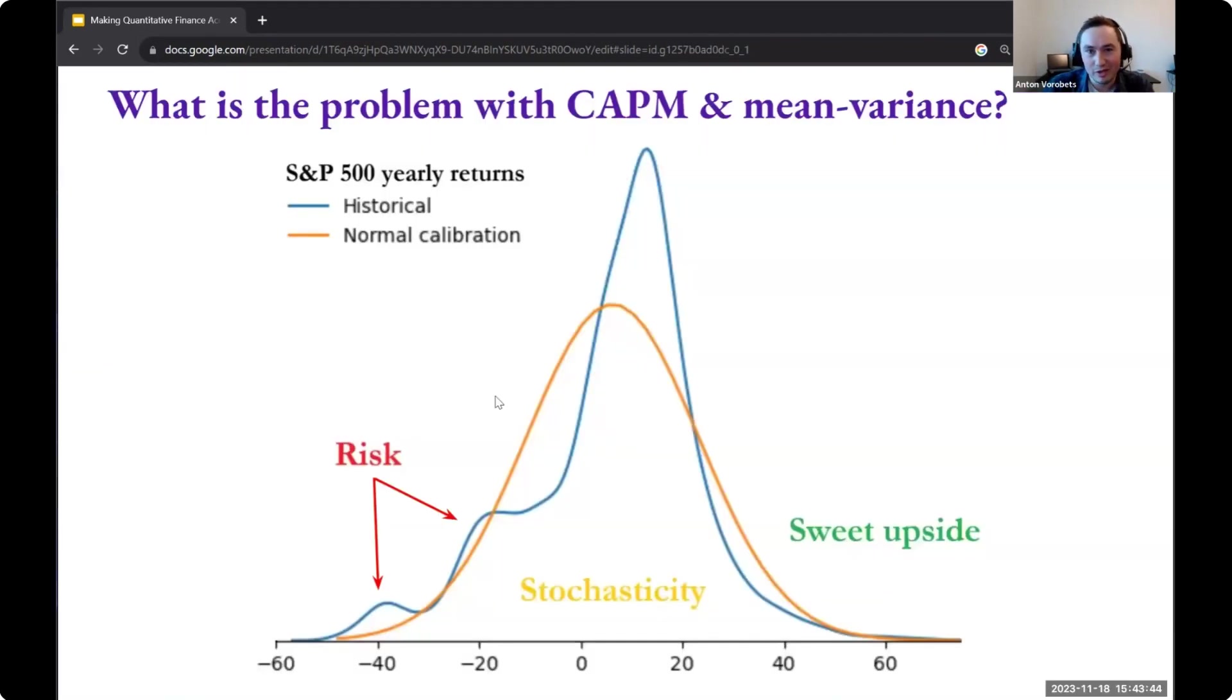But the problem with these theories is that they are not really good approximations of reality. So for example, here, if you look at the historical return on S&P 500, this is the blue curve since 2000, and you look at the best possible normal calibration, then the thing that you see immediately is that scenarios where you lose 40% and 20% have happened much more frequently than this nice bell-shaped curve will predict.